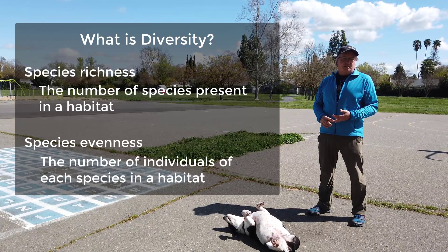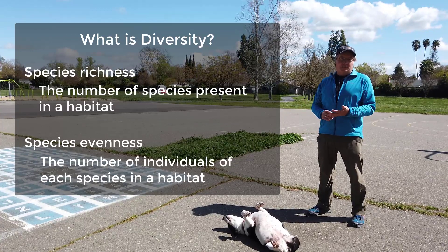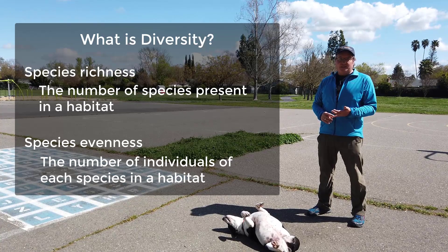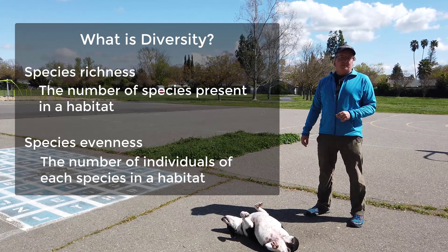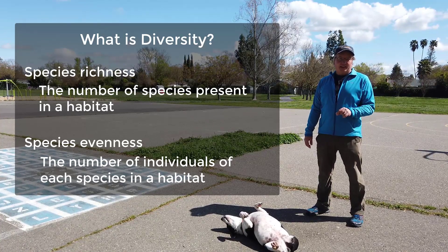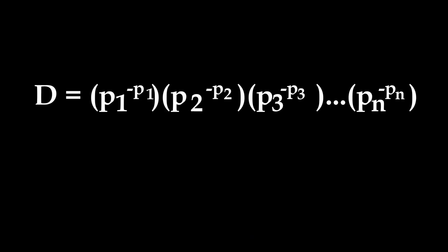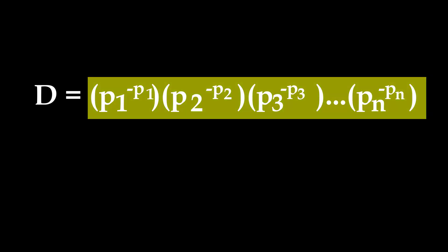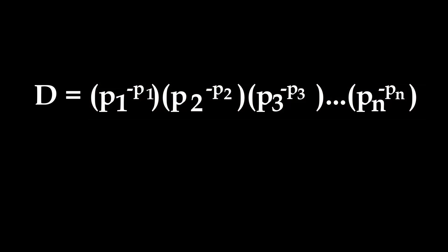Species richness is nothing more than the number of species present in the habitat. Species evenness is the number of individuals of each species in that habitat. Recall the diversity index you learned in your pre-lab — it takes into account both species richness and species evenness. Species richness is reflected by how many times you multiply those PI factors together.